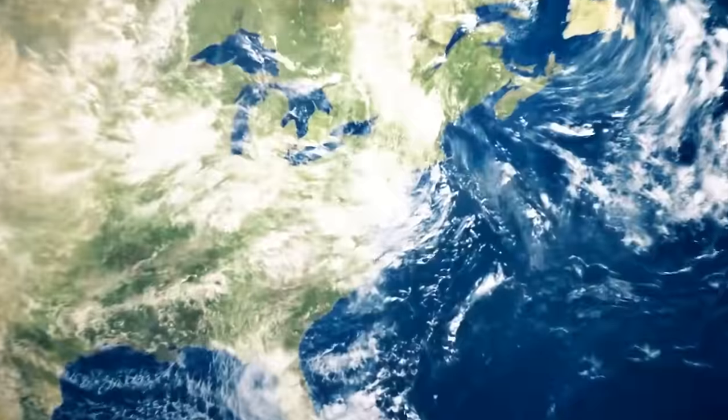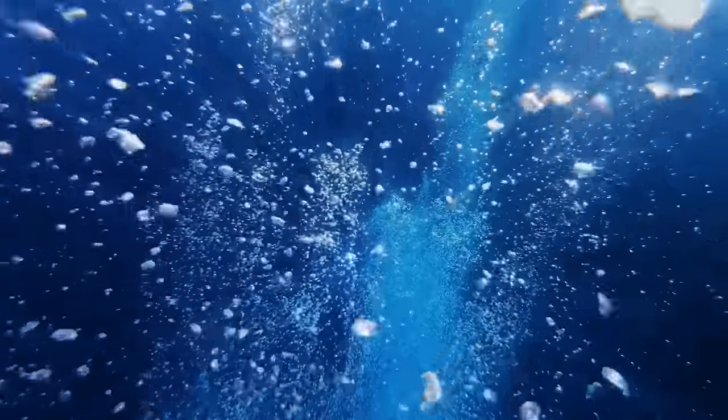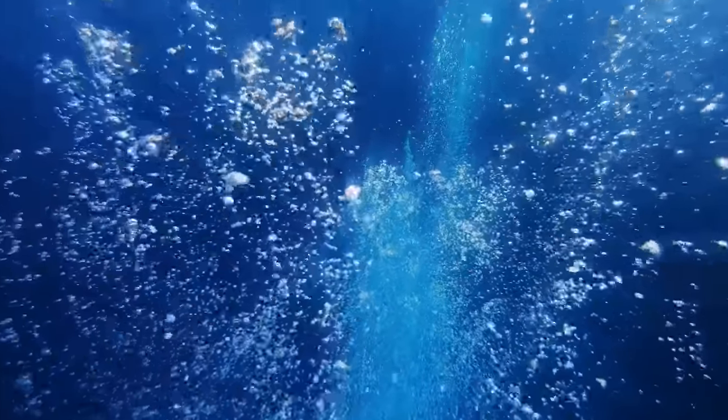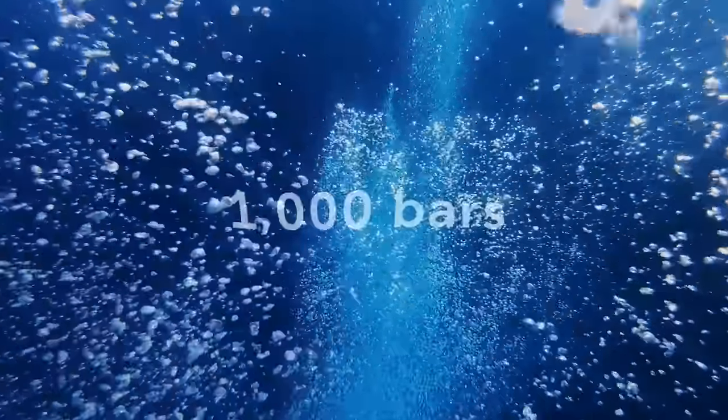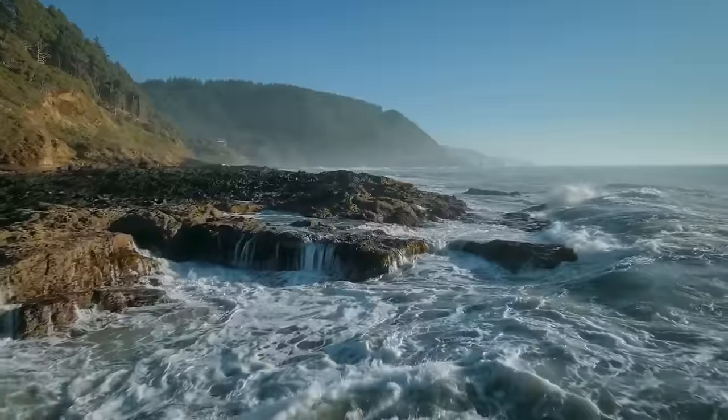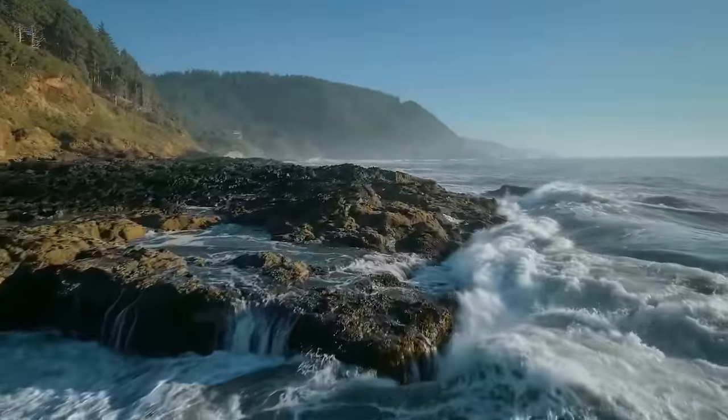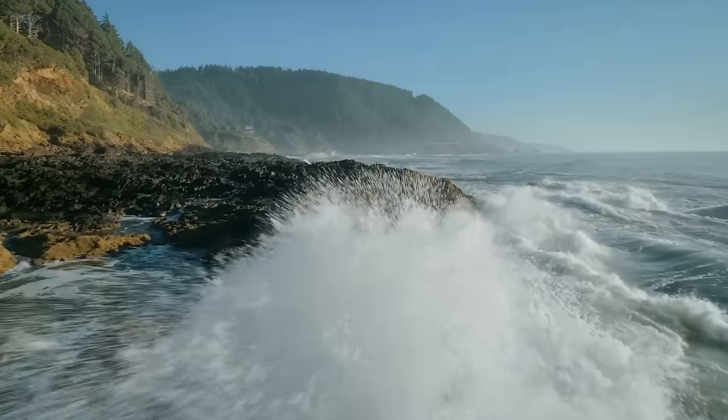Now, to imagine the gigantic pressure that exists near the center of Jupiter, think of the deepest place in Earth's oceans, the Mariana Trench. It's nearly 7 miles deep, and pressures there reach more than 1,000 bars. For comparison, at sea level, you feel the pressure of approximately 1 bar. But that number doesn't seem all that impressive when you think about the pressure at the center of Jupiter. It reaches up to 1 million bars.